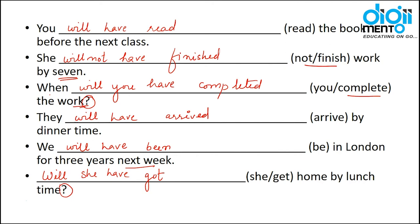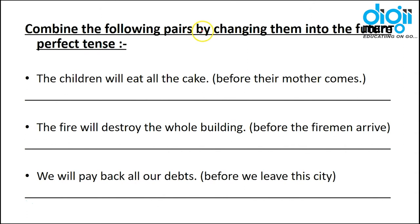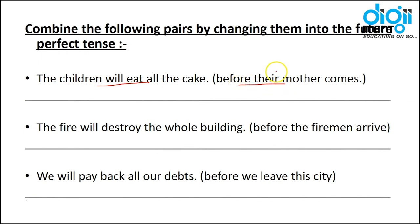Now let's do another type of exercise: combine the following pairs by changing them into future perfect tense. Two sentences are given — one simple future, one simple present — and we combine them into one future perfect sentence. First example: 'The children will eat all the cake before their mother comes.'